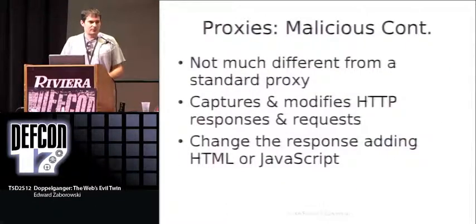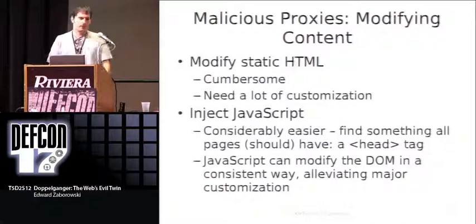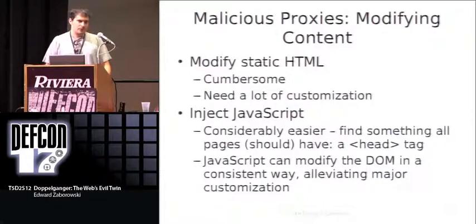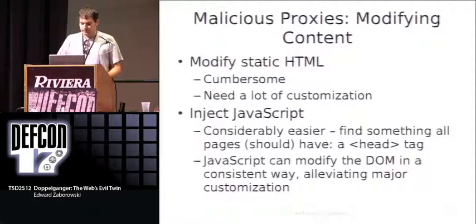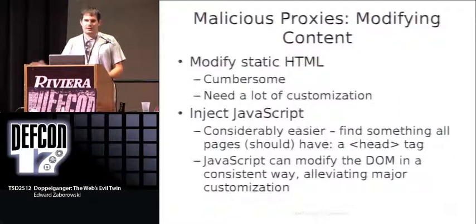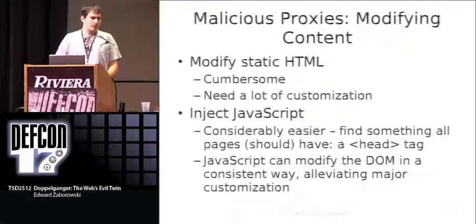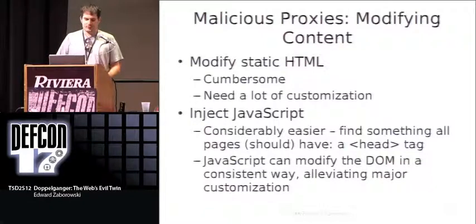A malicious proxy can modify and change the HTTP responses and requests. There are a couple of ways to go about modifying content. One is via modifying the static HTML, but that takes a lot of customization on a per-page basis and is difficult to do for every single page. Another way is via injecting JavaScript directly into the page, which is easier — you only need to find one thing all pages have in common, like a head tag, and add the JavaScript there. This lets the client render the page and modify the DOM consistently.